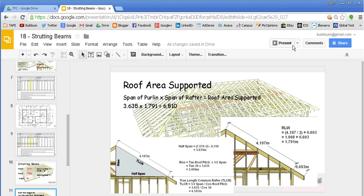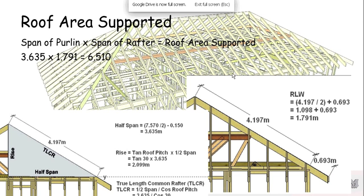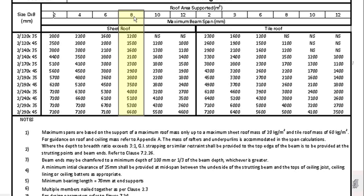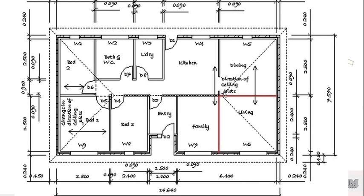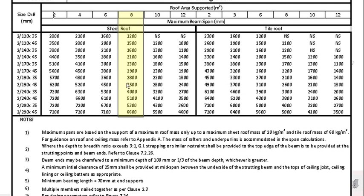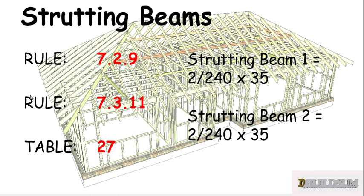The half span we worked out to be 3.635m, multiplied by our half rafter, gives us an area of 6.5 square metres — very similar to before — so we can still use the 8 column. This time our span is 3.69m, so only 3.7, and we have to go to the next available row which is 4m. So we can use two 240x35, which is the same as what we had for the last beam — so two 240x35 for our strutting beams.